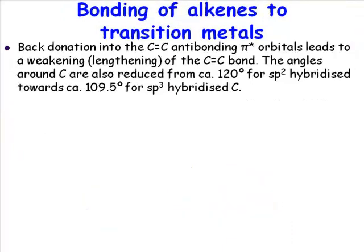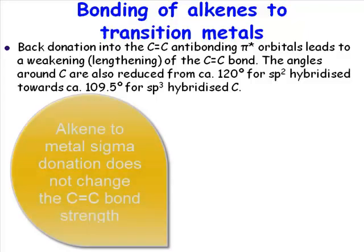If we have donation of the alkene electrons to the d orbital, that does very little to the alkene bond — very, very little. It doesn't weaken it; it doesn't change it very much at all.